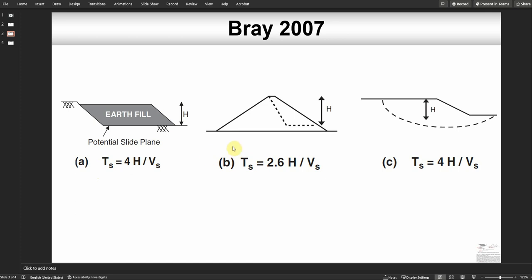In the second case we have a dam and the slip surface looks like a triangle. In this case Bray 2007 suggested to use 2.6 times h, which is from the crest to the estimated slip surface bottom, divided by the shear wave velocity of the material.